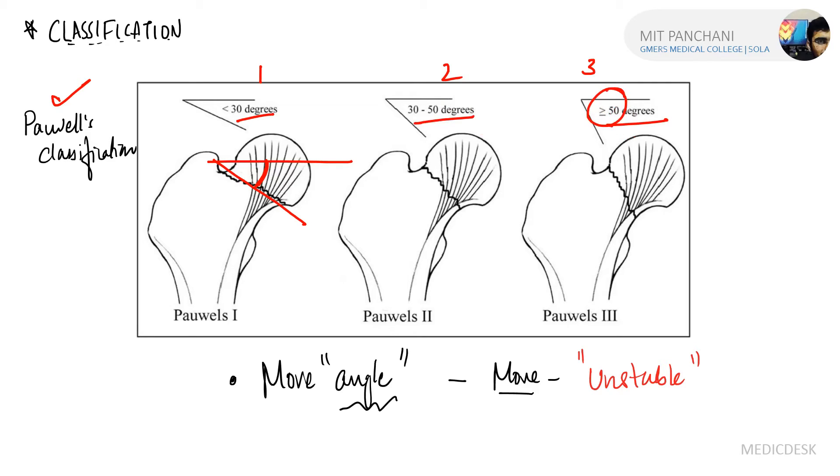The importance of Powell's classification is: if the angle is more, the angle goes on increasing. For example, more than 50 degrees is more unstable. Lesser the angle, more stable the joint.